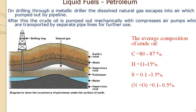You can see the different layers in the earth's crust: impervious rock, followed by brine, then petroleum, then another impervious rock, then the shale rocky layer and earth's crust. This crude oil is pumped out mechanically through compressed air pumps and then separated.